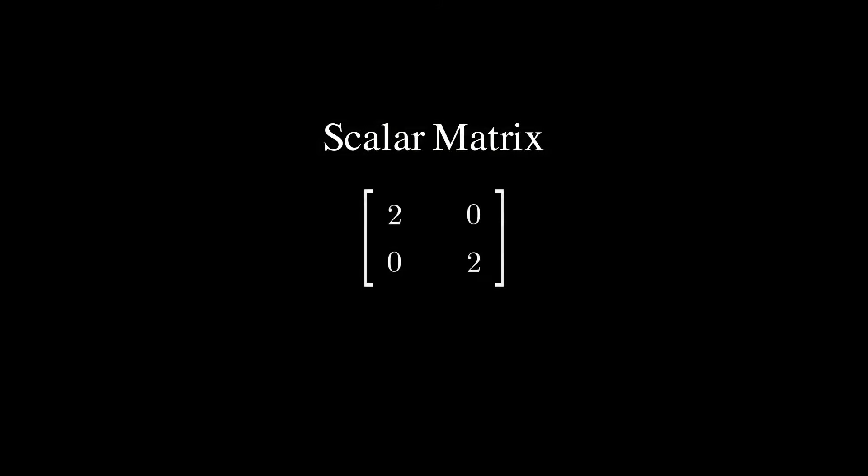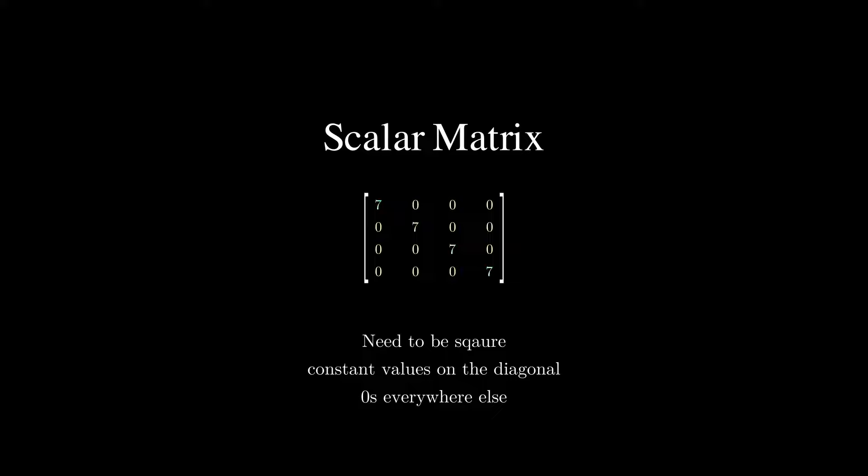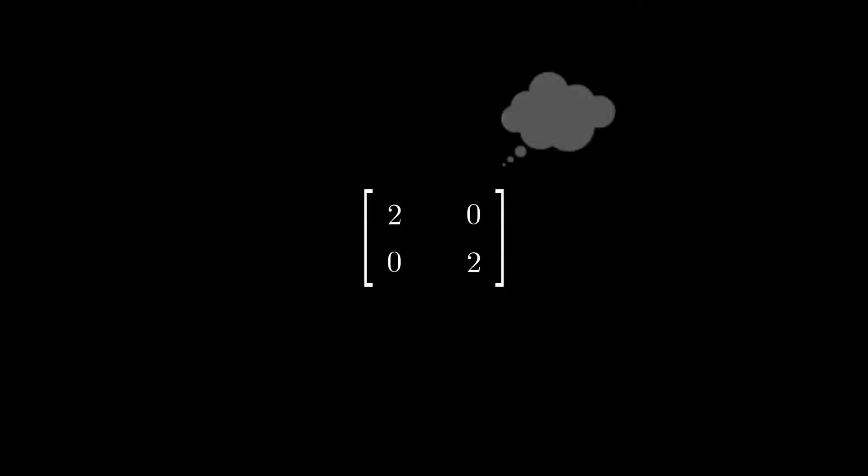The next one is a scalar matrix. The numbers on the diagonal line are the same, and 0s everywhere else. So, it's not saying that there is only one matrix that is the scalar matrix, but any matrix that satisfies this form is regarded as a scalar matrix. Let's try this matrix here.